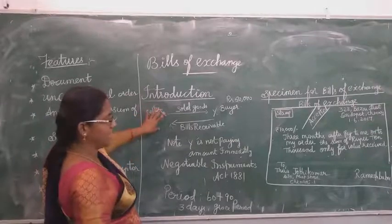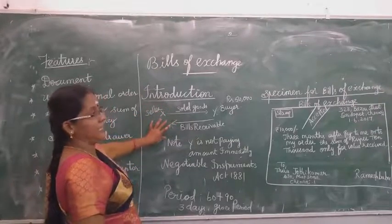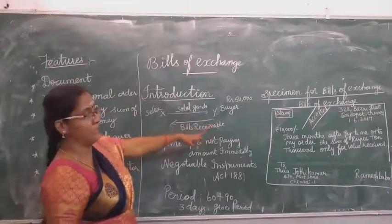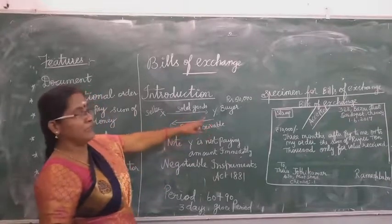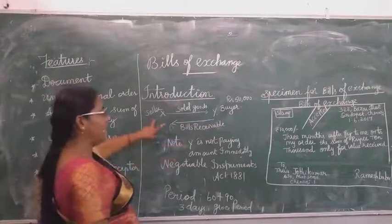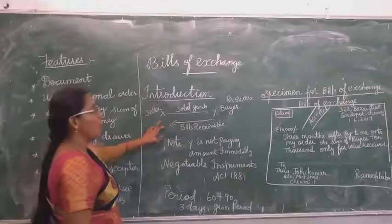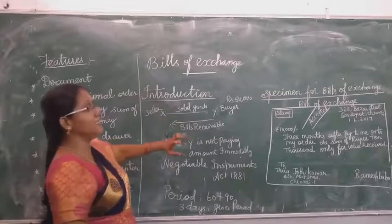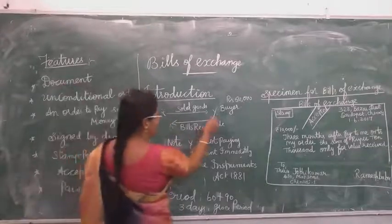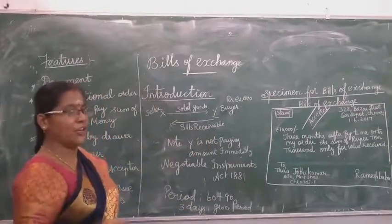As far as X (the seller) is concerned, this is bills receivable. The buyer is the debtor, so it is called bills receivable for X. As far as Y (the buyer) is concerned, that is bills payable.